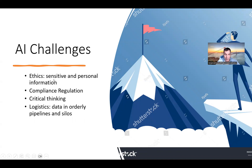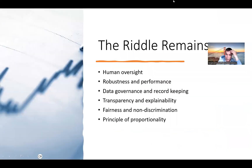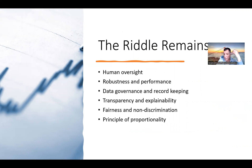The challenges for AI include ethics, compliance, and critical thinking. People think that because of GPT, they don't need to think — a machine will think for them. But AI can also improve your productivity. We still have human oversight in our generation. Remaining challenges include robustness and performance, since there are still some errors; record keeping; transparency; and fairness and non-discrimination. This is important because most AI developers are white males, and there is concern that LLM models are trained in what could be called 'white male language.'